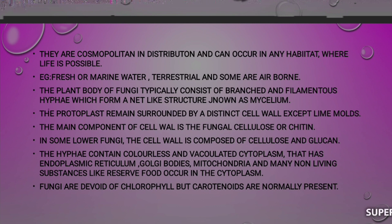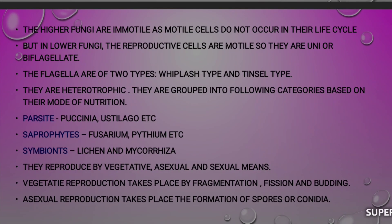They are reproduced by vegetative, asexual, and sexual means. Vegetative reproduction takes place by fragmentation, fission, and budding. Asexual reproduction takes place by the formation of spores or conidia.